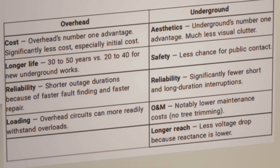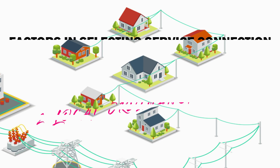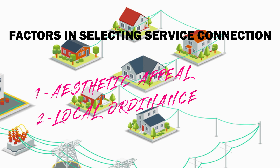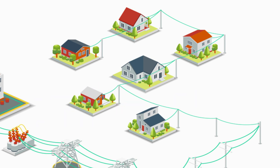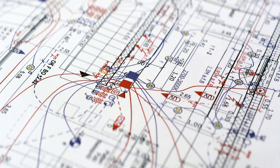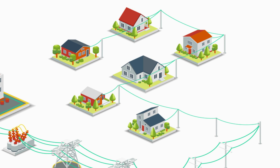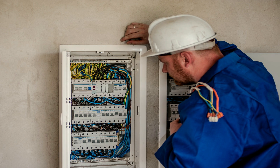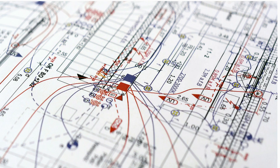Underground cables almost cost twice that of overhead cables. Overhead wiring systems are thus the most common in rural areas. Local ordinance is also a factor when selecting between these choices. As an electrical engineer, you must properly size the service cable while designing. The cable size will be derived from the building connected load, which is derived from the load calculation done for the project.